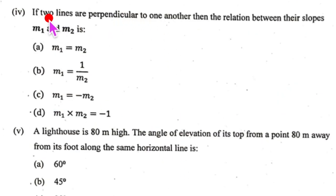Fourth one. If two lines are perpendicular to one another, then the relation between their slopes is m1 m2 equal to minus 1, correct? Where is it? Here. So the option is D.